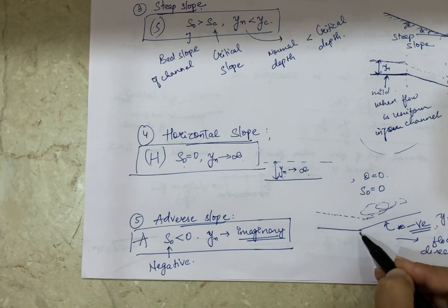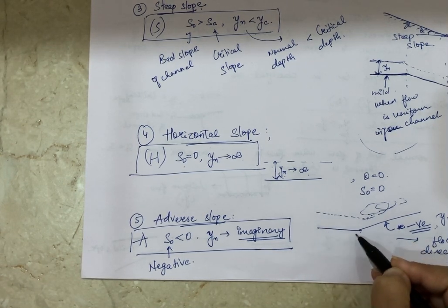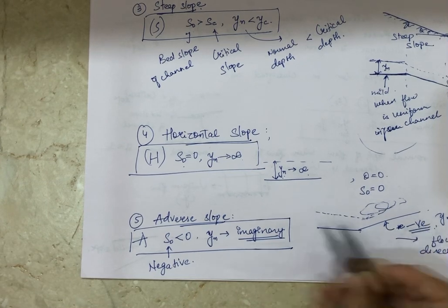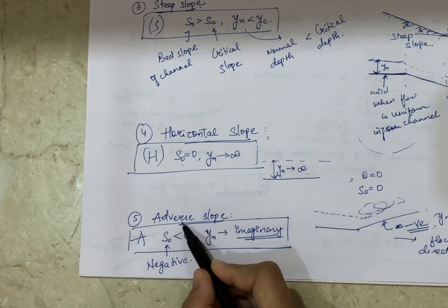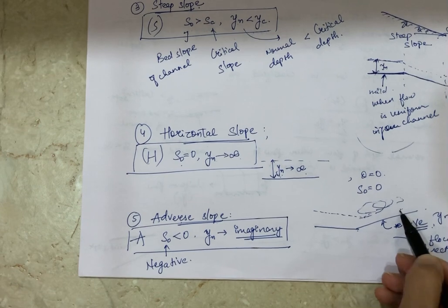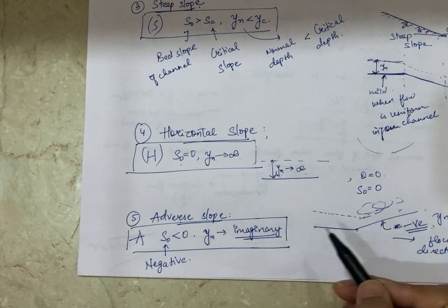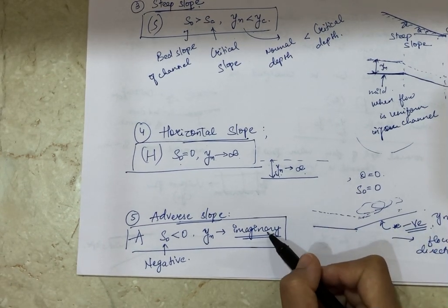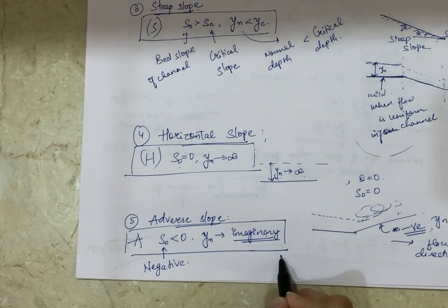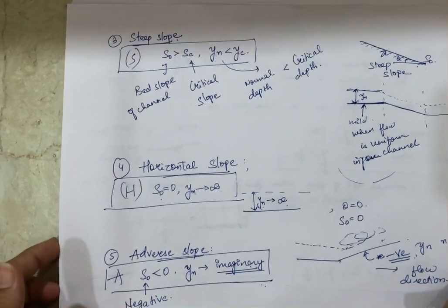For adverse slope, in the flow direction the bed slope is rising rather than falling, so we call it adverse, and S0 is negative. Because the slope is negative, the normal depth cannot exist in the usual sense and becomes imaginary. This is the fifth condition to remember.